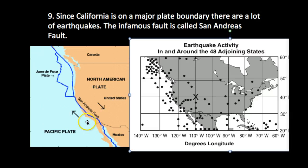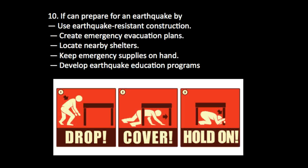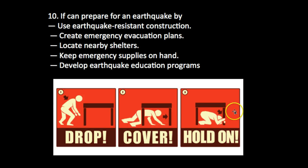So what do people do who live along the San Andreas Fault? Well, they prepare. If you're in an earthquake, you can do things like use earthquake-resistant construction — there are much higher standards for building a house or even just a bookcase in California. You need to create an emergency evacuation plan: where do you go when that happens, where will you meet up with your family? You can look up nearby shelters. Keep emergency supplies on hand, because depending on the severity of the earthquake, it might not be easy to get to a store or hospital. And develop earthquake education programs.